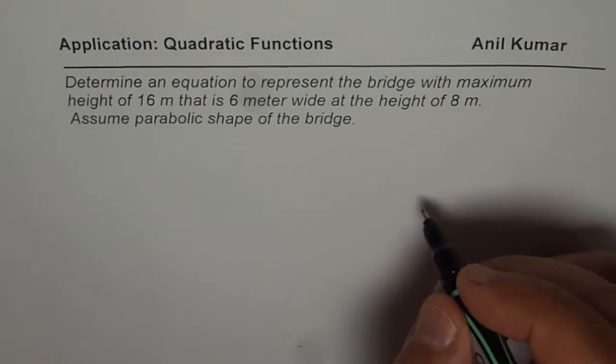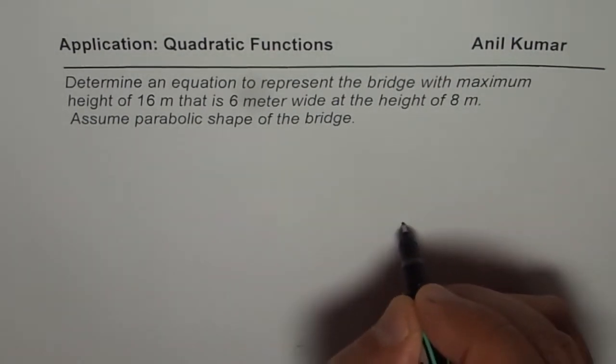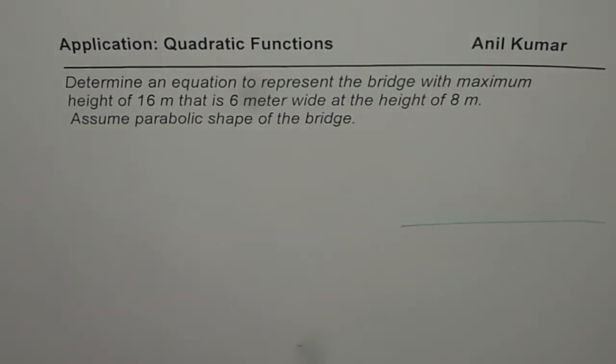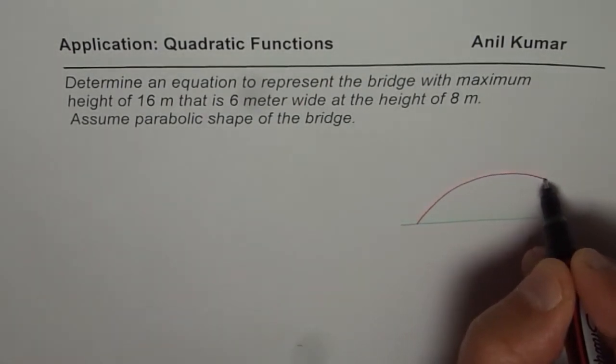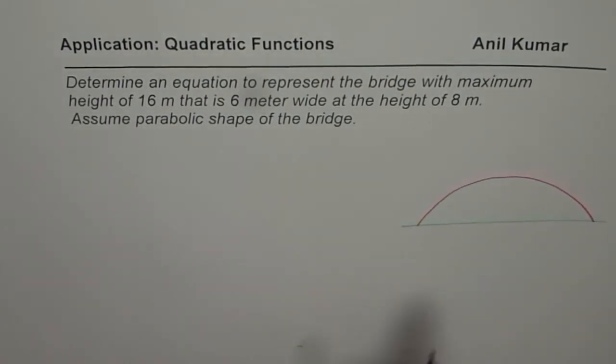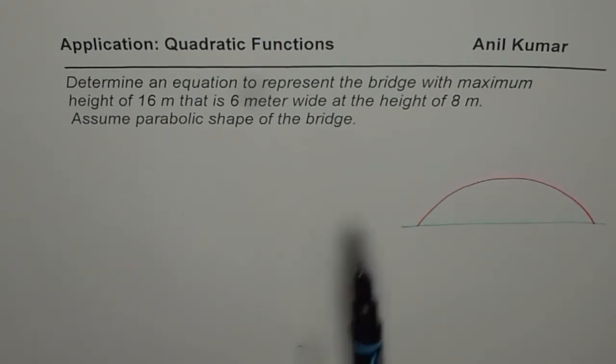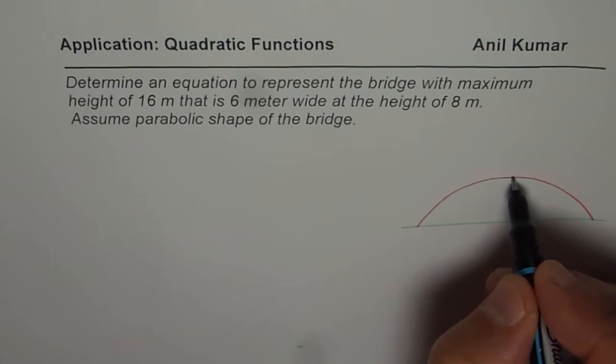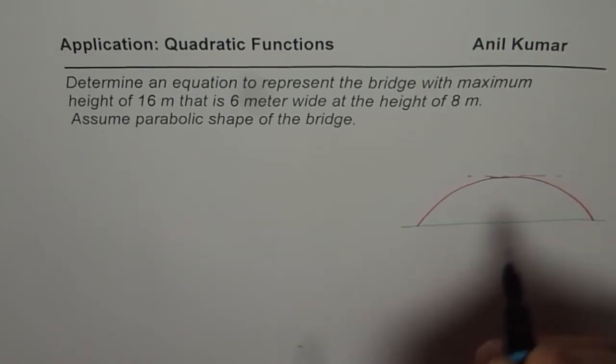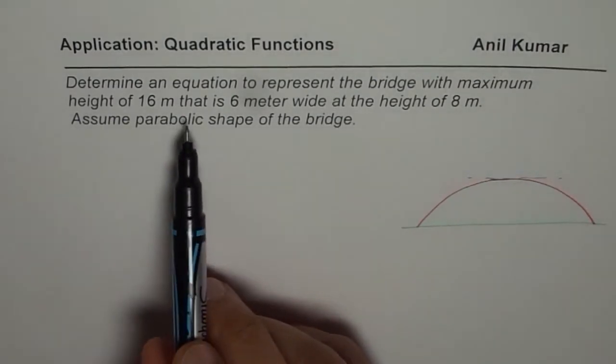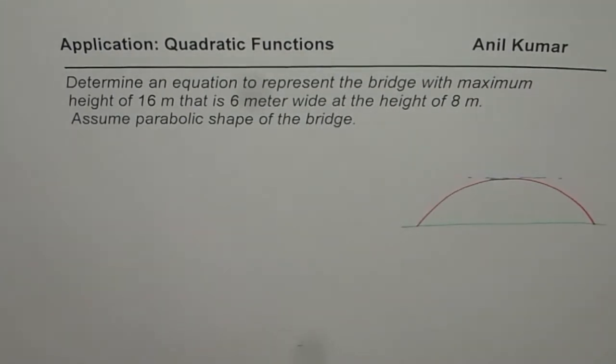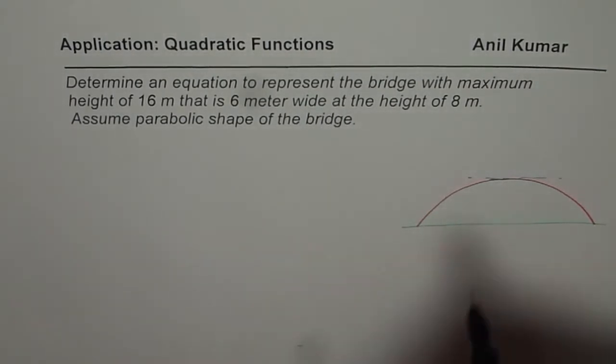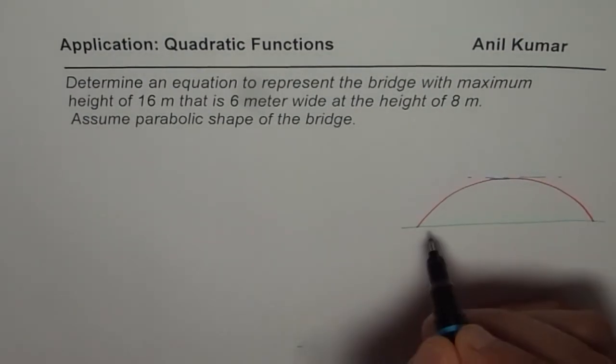So basically we have a parabola. Let's just sketch something here. Let us say this is the parabola which represents the bridge for us. So we assume this is the shape of the bridge. And what are we given here? We are given that the maximum height is 16. That means this height maximum is 16. And 6 meter wide at the height of 8 meters. That is what we are given. So this maximum height is 16.